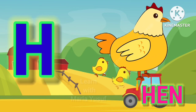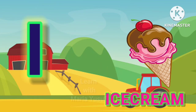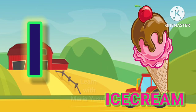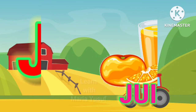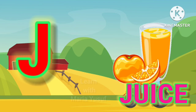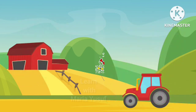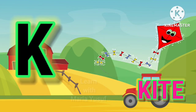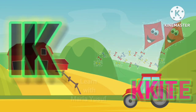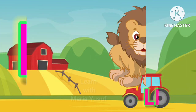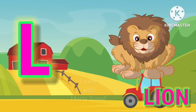I for Ice Cream, J for Juice, K for Kite, L for Lion.